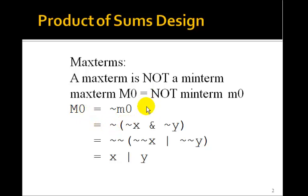Now we can use De Morgan's theorem to not the variables. So not x becomes not not x, not y becomes not not y. Change ands to ors and not the result. All these not nots go away and we end up with x or y. So the maxterm big M0 is just x or y.